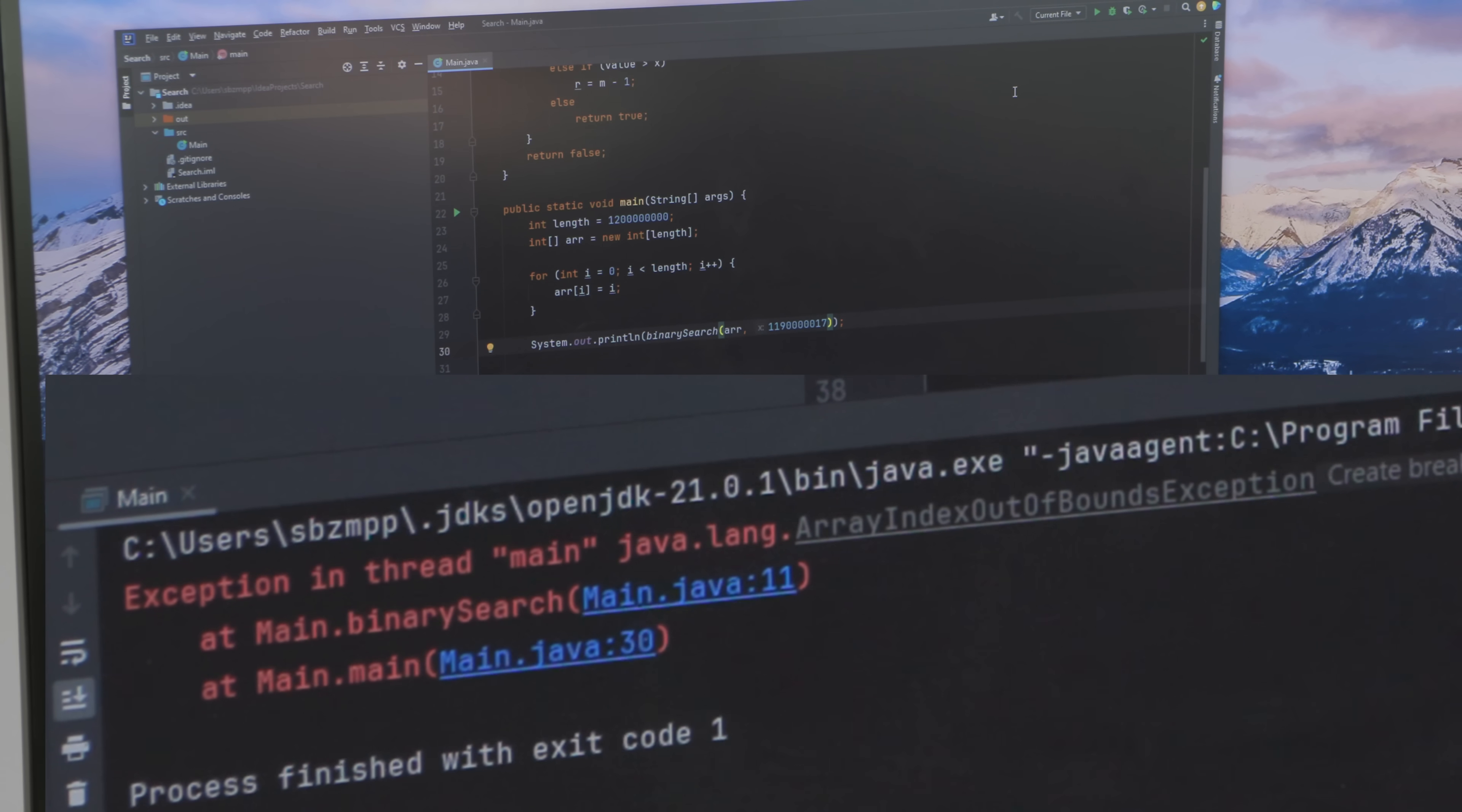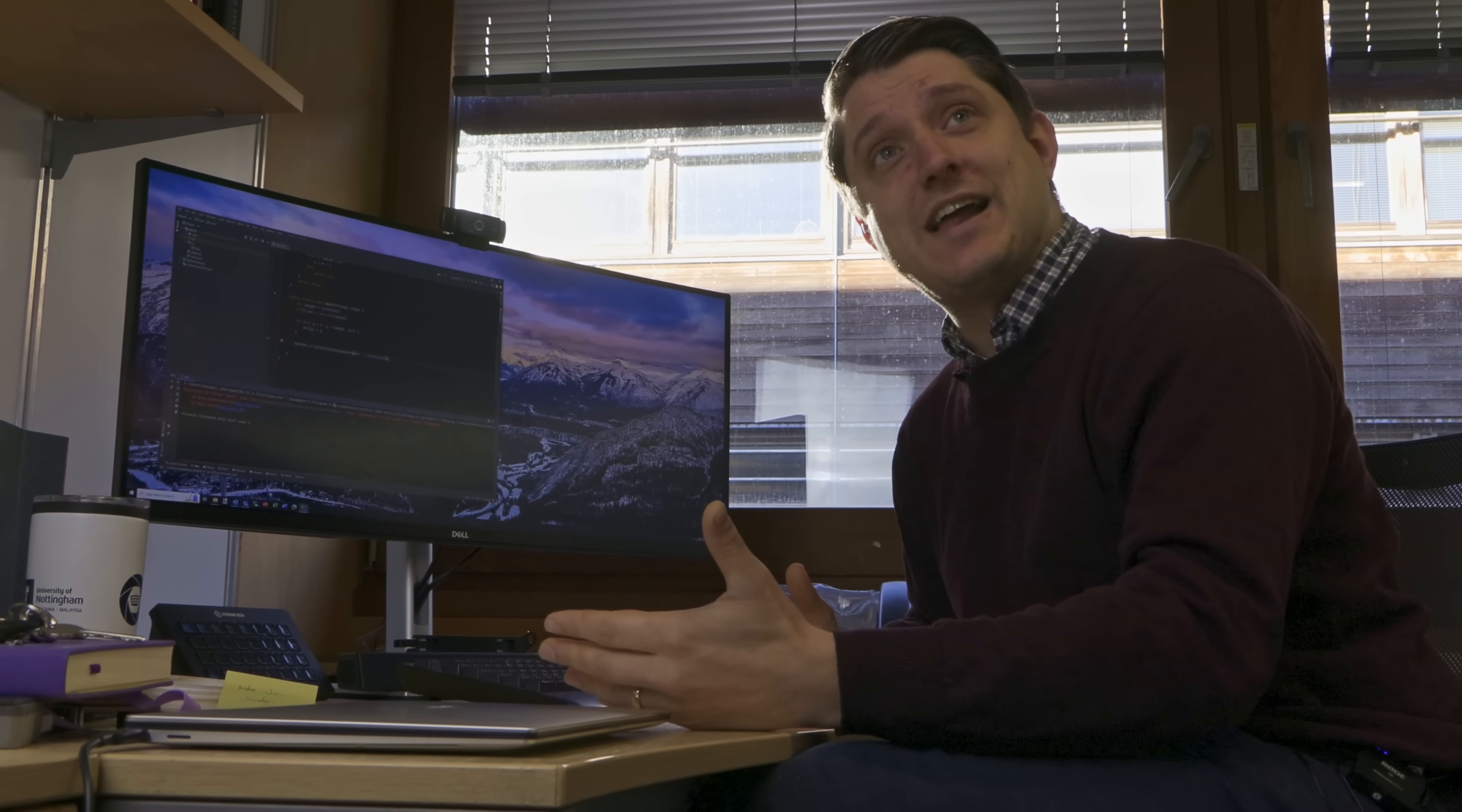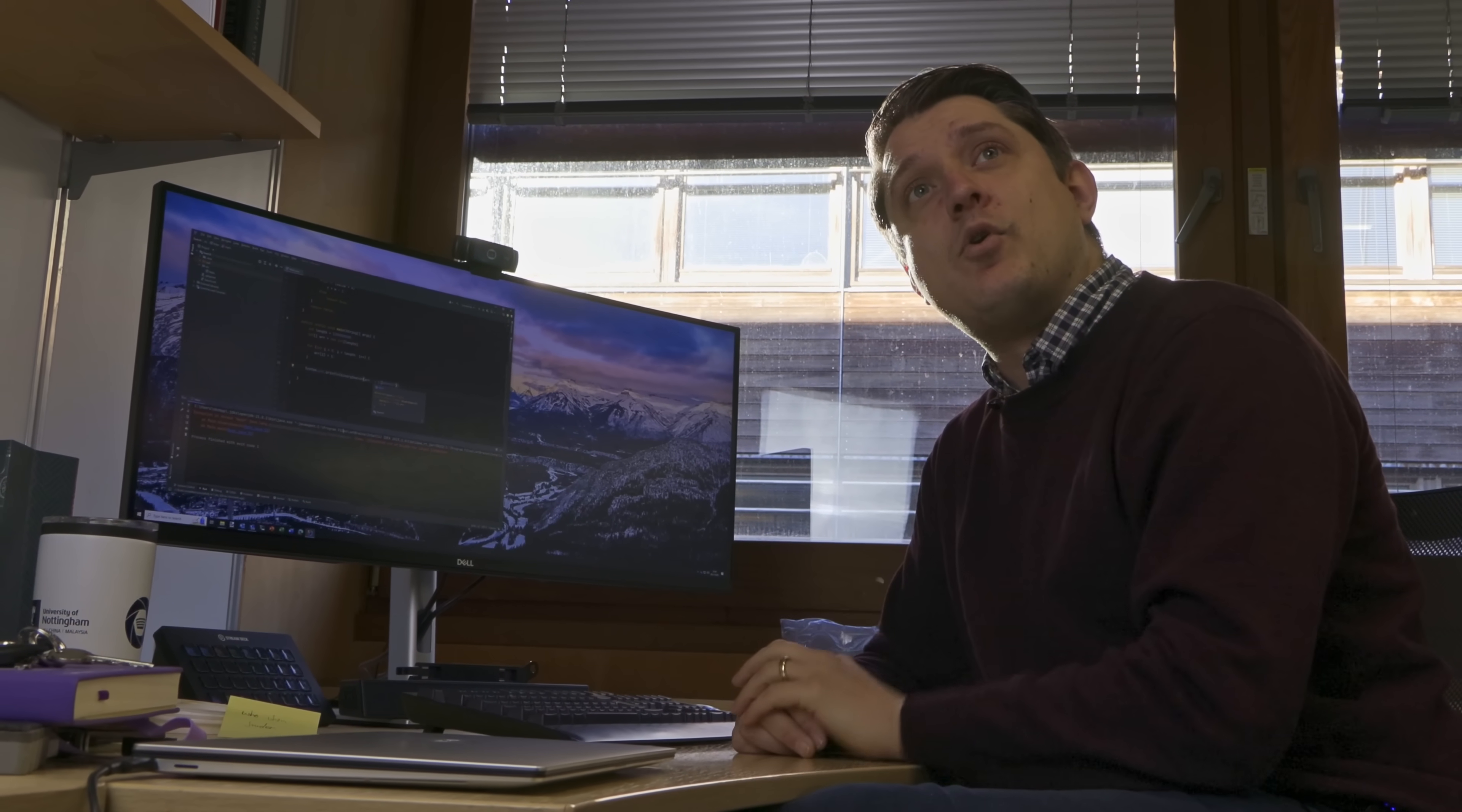Right, we've got an exception, which is kind of, funnily enough, what I wanted to happen. So, our index of minus a billion and something is out of bounds for this array, which is obviously out of bounds, because it doesn't allow negative indices. So, why has that happened? Well, what happened was, at some point, we were looking at this far end of the array, and L and R added up to be a number more than 1.2 billion. So, now let's fix our code and see if we can do a bit better.